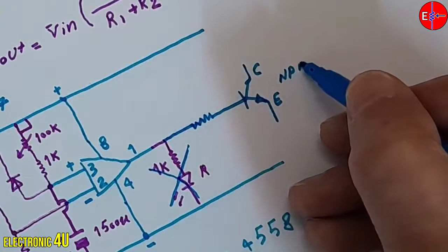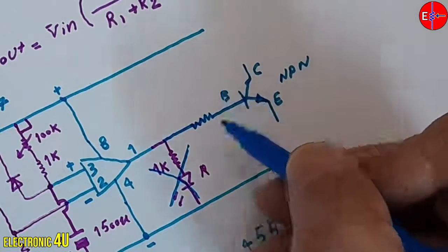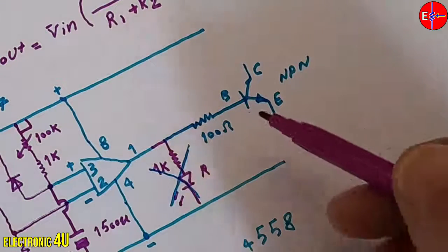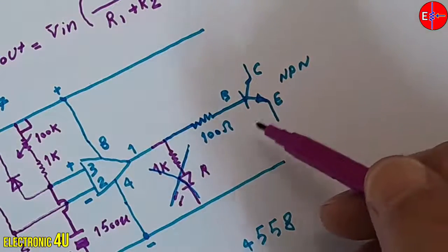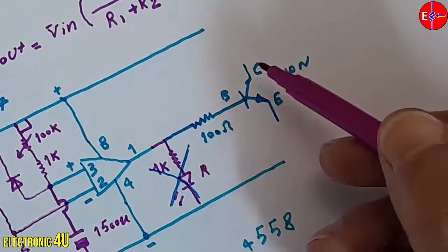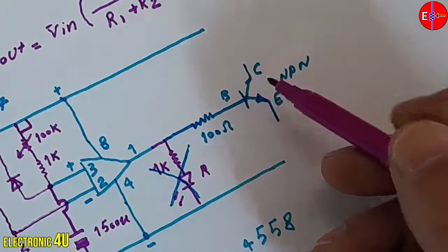I am using an NPN transistor. To use a relay, place the relay coil in the voltage path and the collector of the transistor.